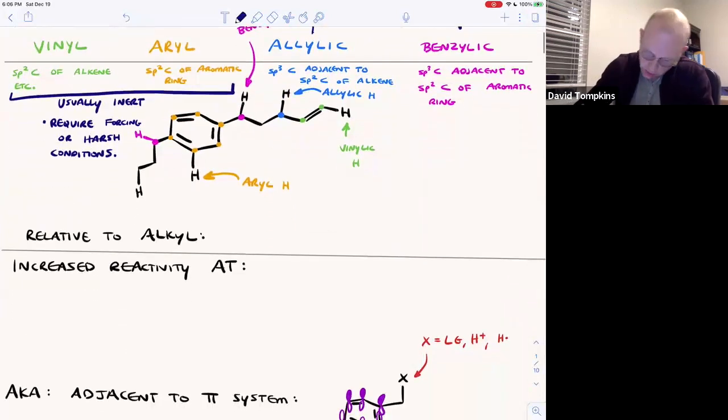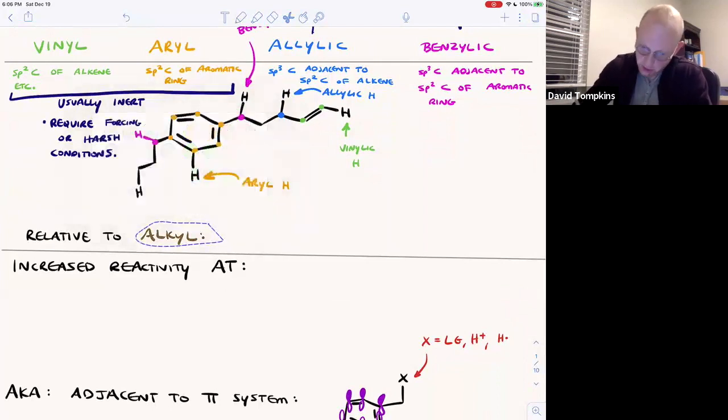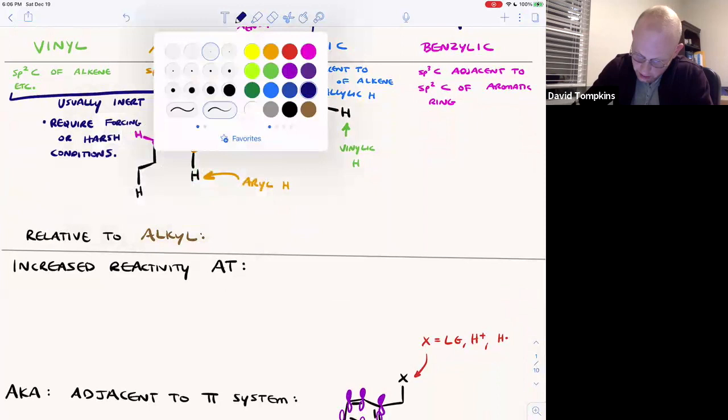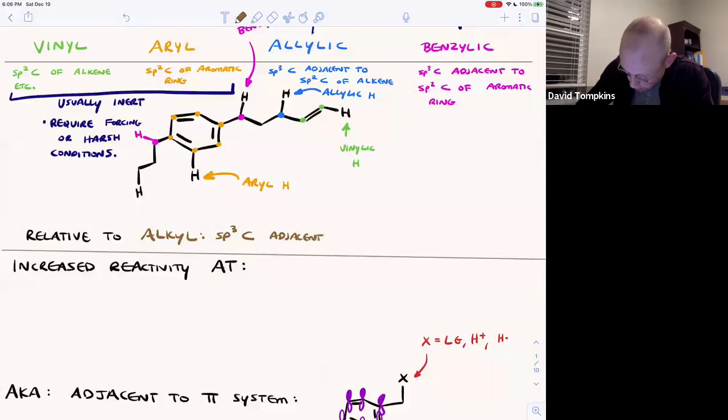Now, one sort of normal hydrogen type that's not especially inert, nor especially reactive, is just an alkyl hydrogen. So these alkyl positions are sp3 carbons that are adjacent only to other sp3 carbons. So an alkane has all alkyl carbons.